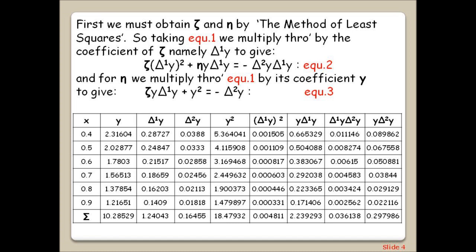First, we must obtain zeta and eta by the method of least squares. So taking equation 1, we multiply through by the coefficient of zeta, namely delta 1Y, to give equation 2. The x and y values for x equals 1 and 1.1 were needed to obtain the finite differences, but have been omitted from the table as they take no further part in the workout. They can be back calculated and restored if required.